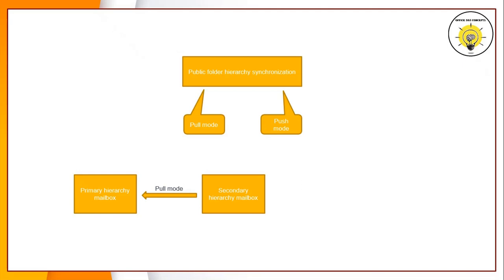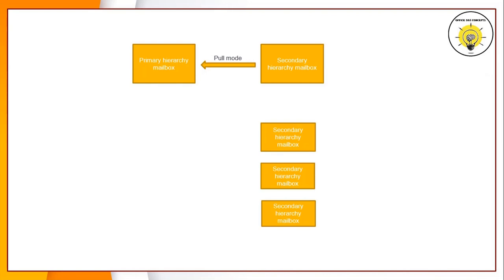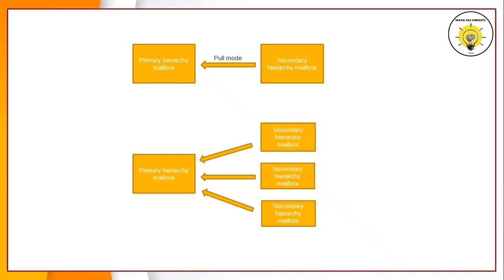However, there are some limitations with pull mode. Secondary mailboxes have no way to know if there had been a change within the hierarchy, so they would keep connecting to the primary mailboxes at defined intervals even if there was no change. If there are multiple secondary mailboxes, it would require more sync jobs, which needs more connections to the primary mailbox and can result in delay in processing time.